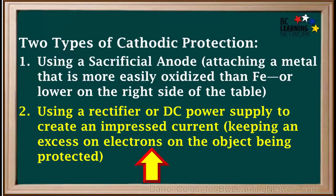The second method is accomplished using a rectifier, or DC power supply, to create an impressed current. Excess electrons pumped onto the object being protected will be used for the reduction of oxidizing agents, and will eliminate the need for any iron atoms to be oxidized.